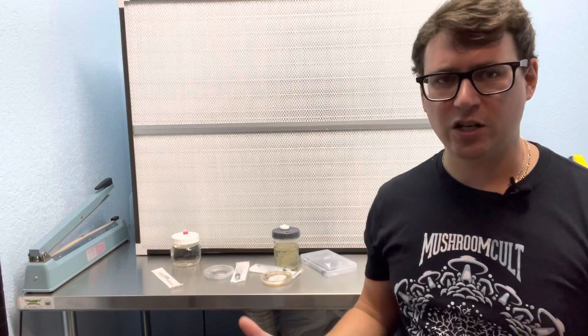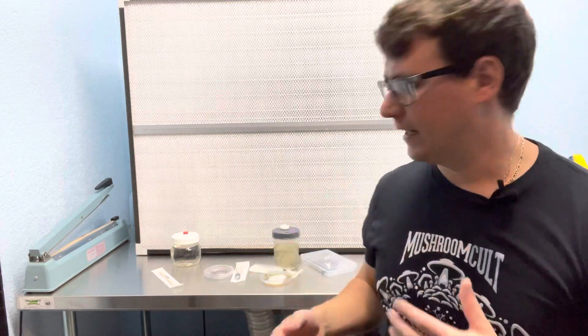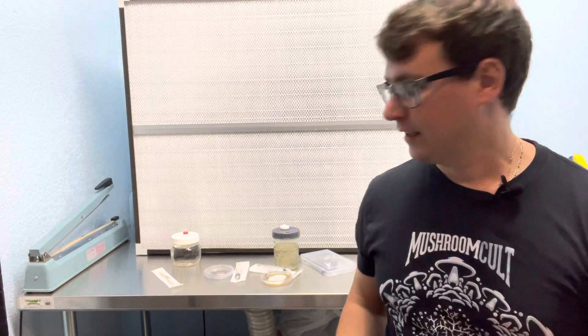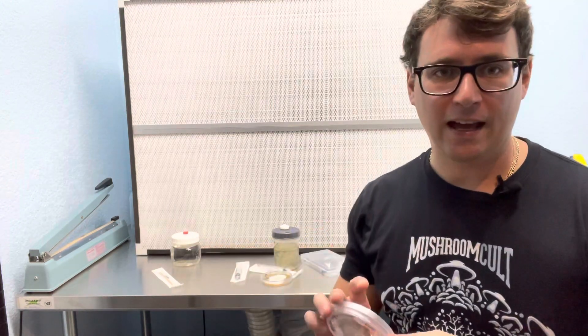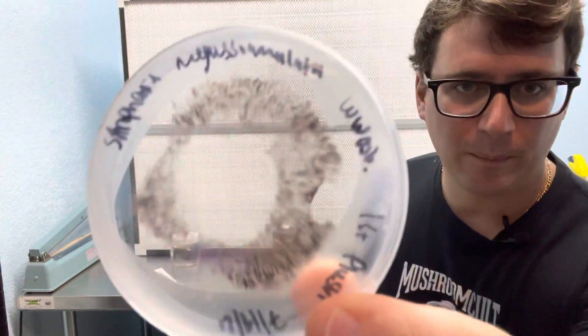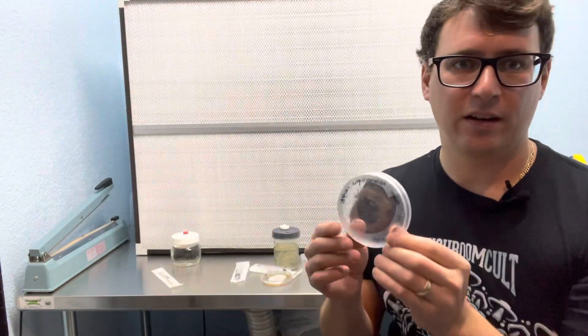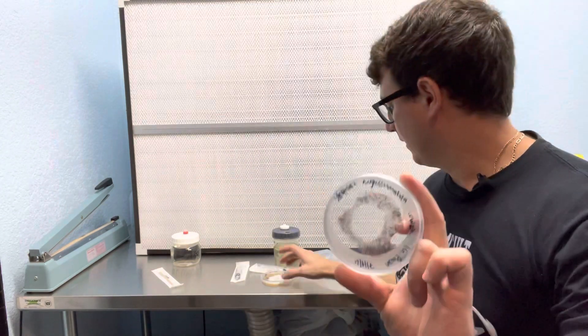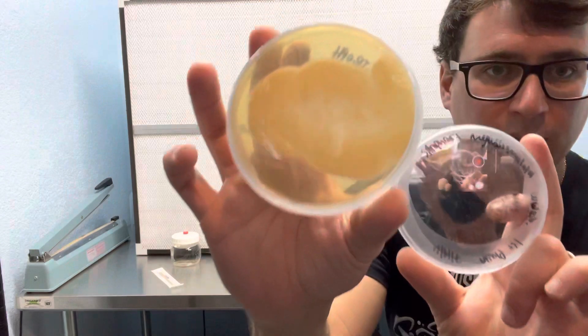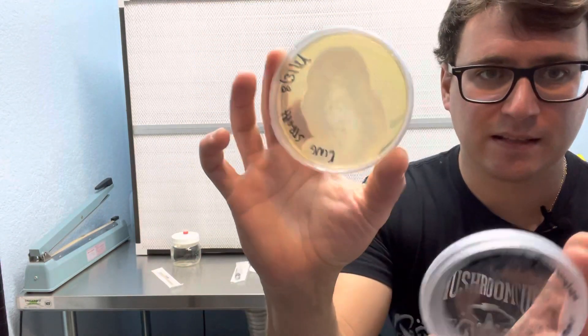Right off the bat, the preparation between a liquid culture and a spore syringe is completely different. So right now I have a spore print of a Stropharia rugosoannulata or the King Stropharia. This right here is the same species on agar, and then this is a beautiful spore print.